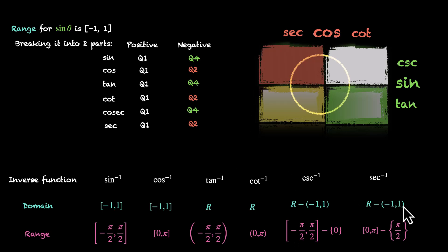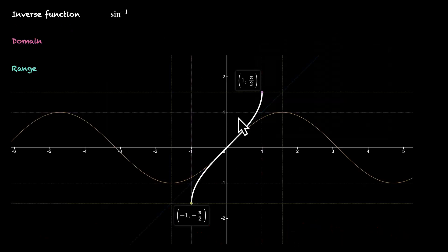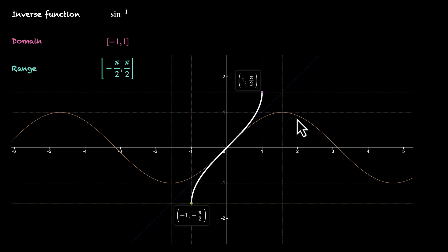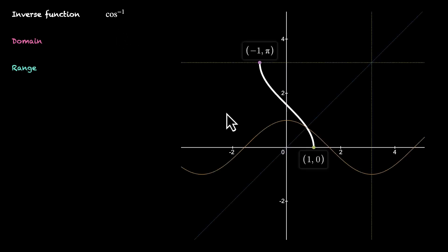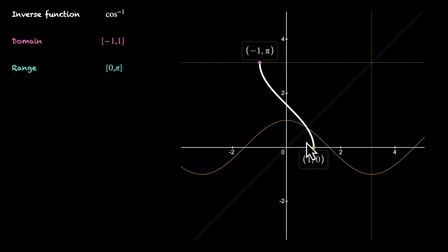Now that we have the domain and range for inverse functions, let's look at their graphs. Sine inverse x has this graph. The domain is minus one to one and the range is minus π/2 to π/2. This graph is the mirror image of sine x in the line y equals x — the blue line. You can also see the quadrants at play: the first quadrant from zero to π/2, and the fourth quadrant from minus π/2 to zero. For cos inverse x, the domain is minus one to one and the range is zero to π. You can see that x equals minus one gives π, because cos(π) is minus one, and x equals one gives zero because cos(0) is one.